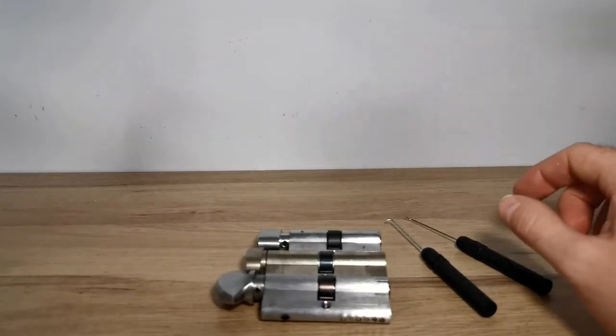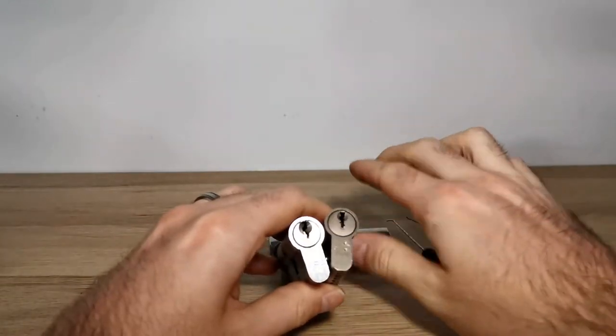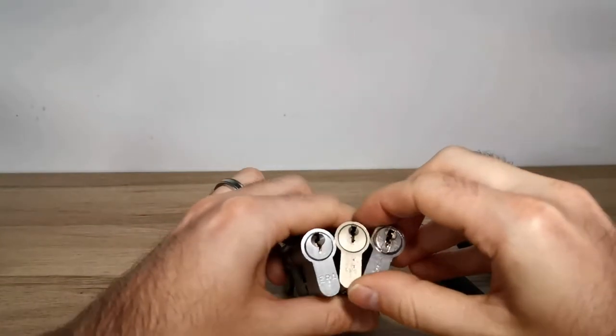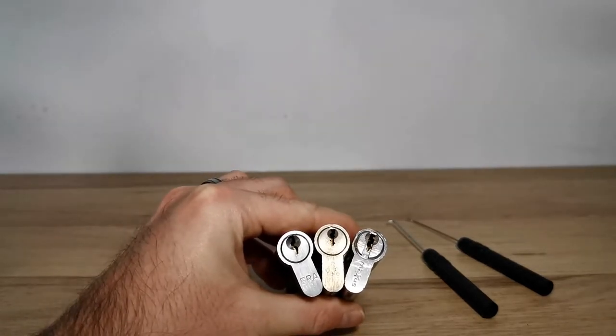So I have three locks here. I have an Eera, a Yale, and a Maxis, and as you can see they've all got very slightly different keyways.